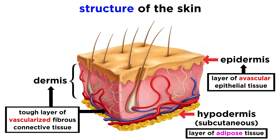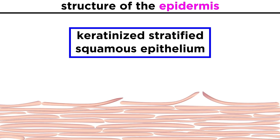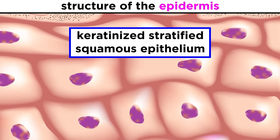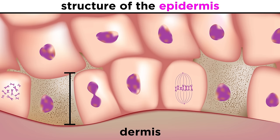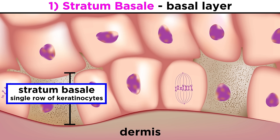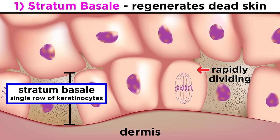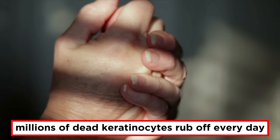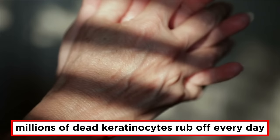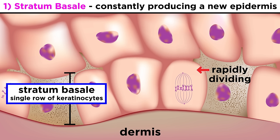Now let's zoom in on the epidermis, the thin outer layer of the skin. This is made of keratinized stratified squamous epithelium, made of four different cell types in five layers. The deepest layer, the one attached to the dermis, is called the stratum basale, meaning basal layer. This is made of a single row of cells, most of which are called keratinocytes. These are rapidly dividing all the time, pushing new cells up into the layers above to help regenerate dead skin, and producing lots of keratin as they do so. This is necessary because millions of dead keratinocytes rub off your skin every day due to friction, and even more from your hands and feet, so these constantly dividing cells in the stratum basale ensure that a new epidermis forms every few weeks so that we always have our skin intact.